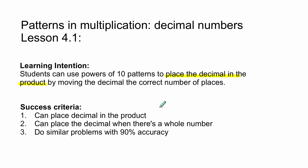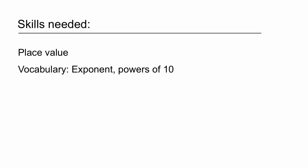To be successful, you'll be able to place the decimal in the product and know where it goes. When there's a whole number with no decimal, you'll know where to put the decimal onto that whole number in order to move it. If you can do similar problems at a 90% accuracy rate, you're going to be successful.